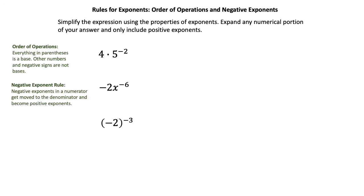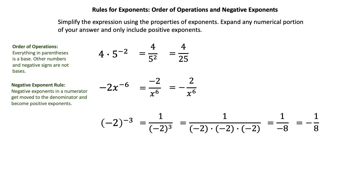Pause the video to work on these practice problems, then check your answers. The first answer is positive 4 over 25. The second answer carries through the negative, giving negative 2 over x to the 6th. The third answer: the negative moves to the denominator and negative 2 multiplied by 3 gives negative 8, so the final answer is negative 1 over 8. Good luck as you continue to practice this skill.